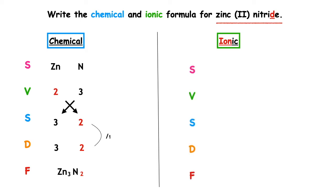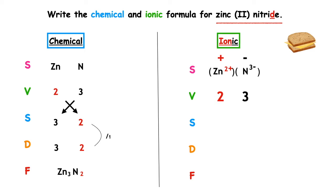The first couple of steps for the ionic formula are the same. Symbol Zn, valency two. Symbol for nitrogen N, valency three. Metals always lose electrons to form positive ions, and non-metals always gain electrons to form negative ions. Remember, we need to make a sandwich and wrap it up. Two times positive gives two positive — put brackets around that. Three times negative gives three negative — put brackets around that. Swap the valencies over; highest number is one. So the ionic formula is (Zn²⁺)₃(N³⁻)₂.